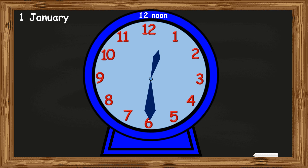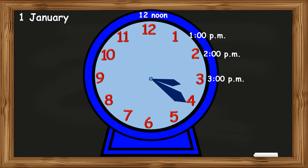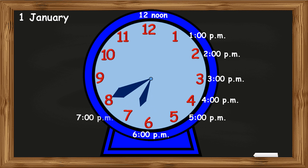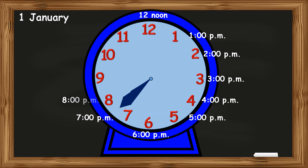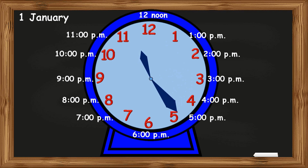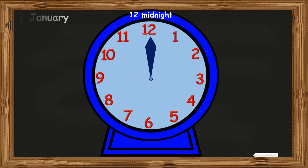One hour after 12 noon it becomes 1 o'clock once again, but this time it is 1 PM. Followed by 2 PM, 3 PM, 4 PM, 5 PM, 6 PM, 7 PM, 8 PM, 9 PM, 10 PM, 11 PM, and then when it becomes 12 midnight, a new day begins and the date changes to 2 January.